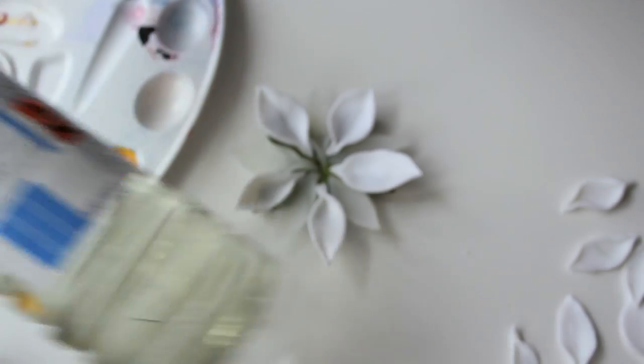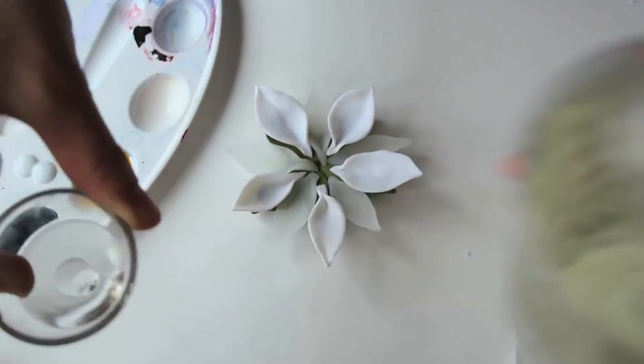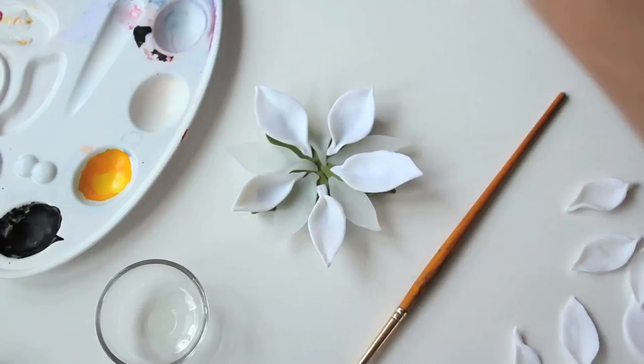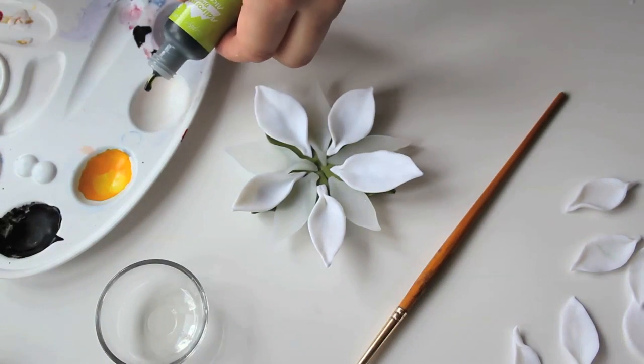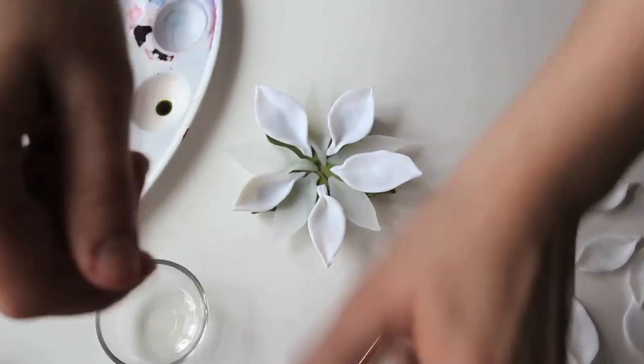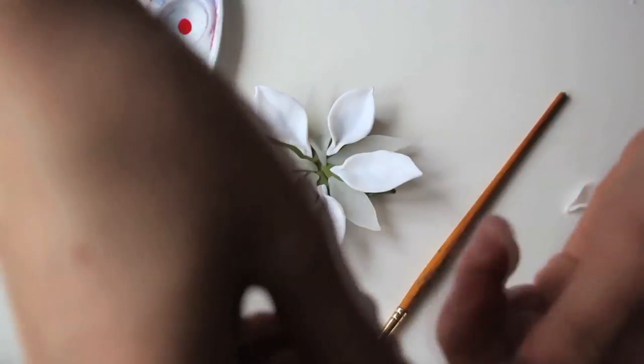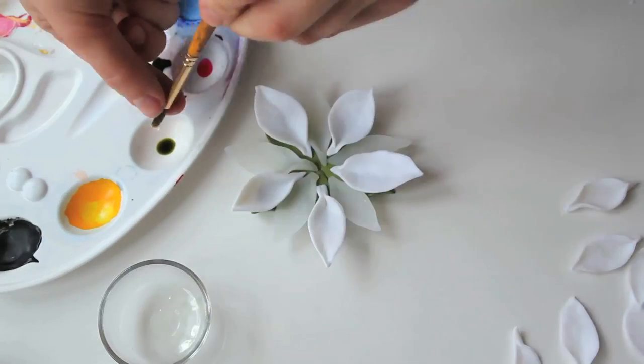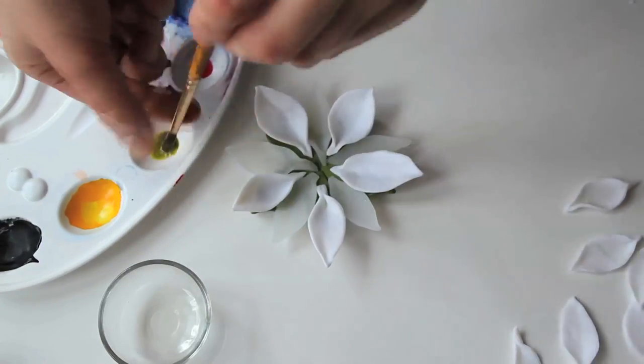It's time to paint! Take your surgical spirit, your alcohol-based inks, a color palette and a brush. Pour some surgical spirit into a little bowl. Take only one drop of each ink color and drop it into the color palette. Then dip your brush into the surgical spirit and use what's on the brush to dilute the color.